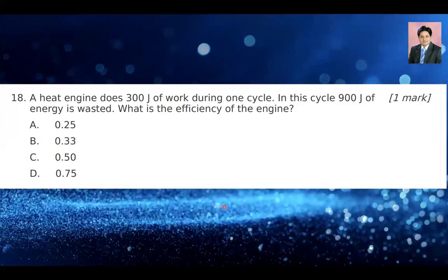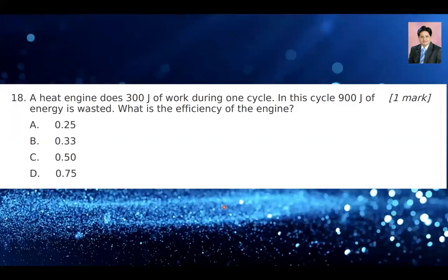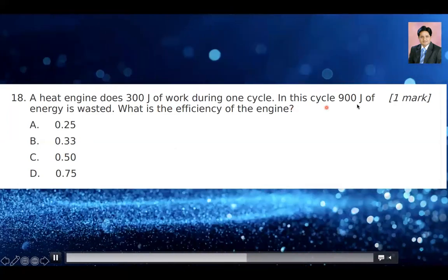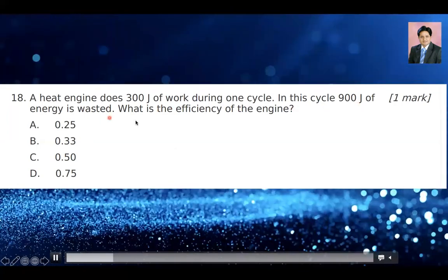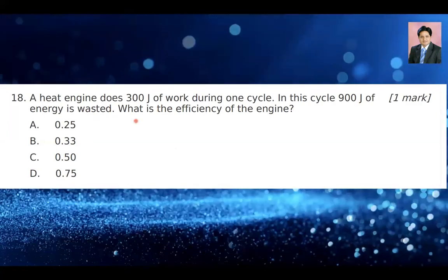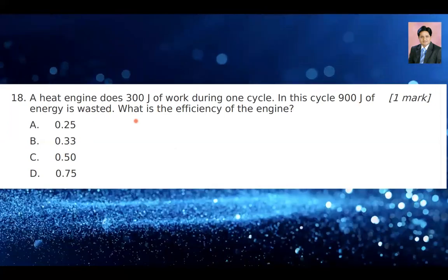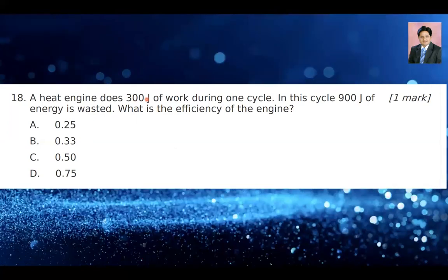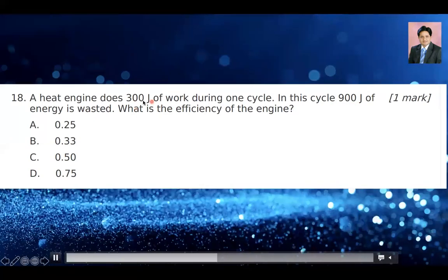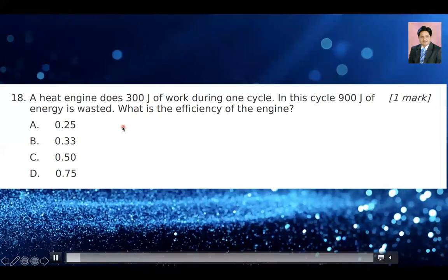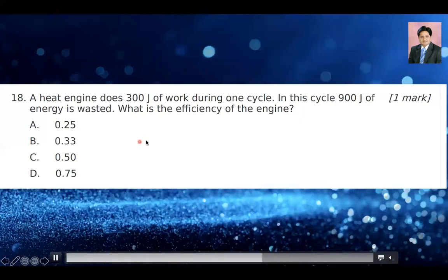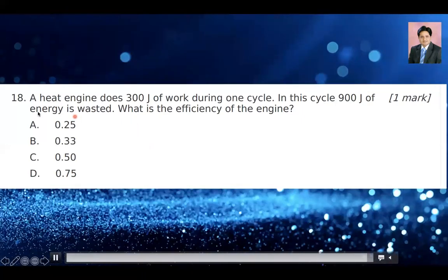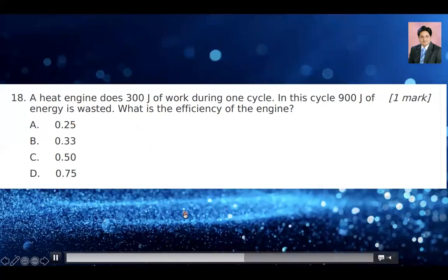Question number 18: a heat engine does 300 joules of work during one cycle, and 900 joules of energy is wasted. What is the efficiency of the engine? Efficiency equals output over input. The output is 300 J and the input is 900 + 300 = 1200 J. So efficiency = 300/1200 × 100 = 25%, which is 0.25. So the answer is option A — 0.25.